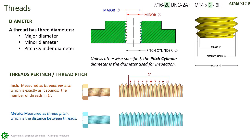For metric threads, we measure the thread pitch, which is the distance between two adjacent threads. If we measure between two adjacent threads, we measure 1.5 millimeters.